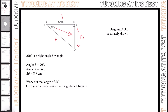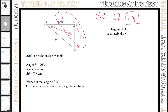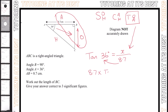Step two, we need to choose whether it's SOH, CAH, or TOA. We know we need to work out BC, and we know we have A, which is our adjacent. So we can highlight two of these sides — that ends up with O and A, which means we are using tan. So we have tan 36 degrees equals O divided by A, which is x over 8.7. All we now need to do is make x the subject: 8.7 multiplied by tan 36 gives us x. Our answer is 6.32.